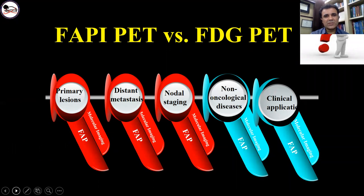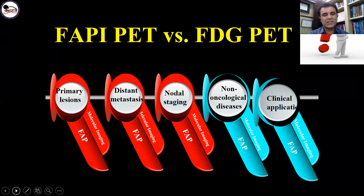There is a big question with this exciting topic: which is better — FAPI PET-CT or the current standard care FDG? There are very few studies assessing head-to-head intra-individual comparison of the two tracers in terms of primary lesion, distant metastasis, nodal staging, and even in non-oncological diseases, but hopefully these will translate to clinical settings both in cancer and non-cancerous conditions.